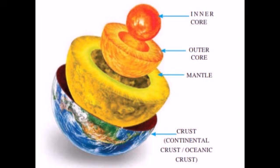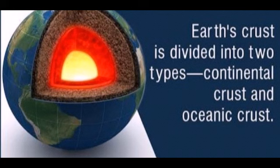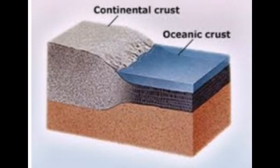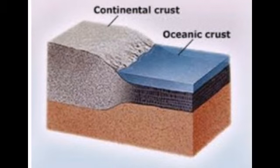The crust is divided into two sub-layers: continental crust and oceanic crust. The continental crust is mainly composed of silica and aluminium. The thickness of this layer is approximately 30 kilometers. Granite rocks are mainly found in this layer.